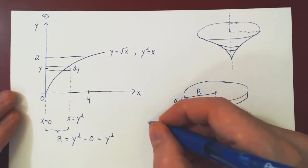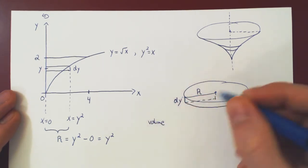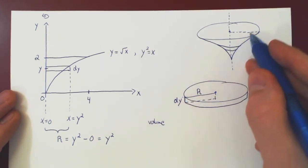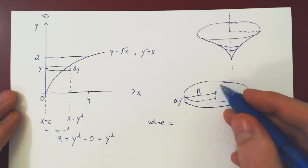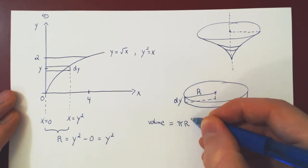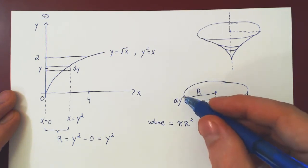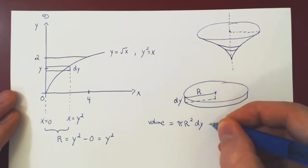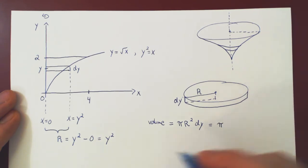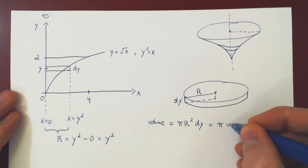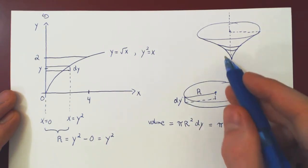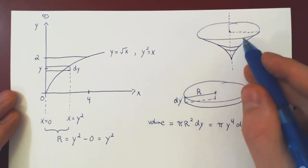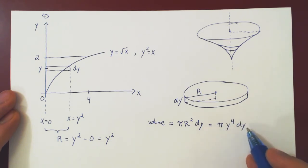Now we're good to go. The volume of this little cross-section — the disk — is given by the surface area pi r squared (since the region is a circle) times the thickness dy. Since the radius is y squared, squaring the radius gives y squared squared, which is y to the 4. So the volume of this little disk, this cross-section of the full solid, is pi times y to the 4 times dy.